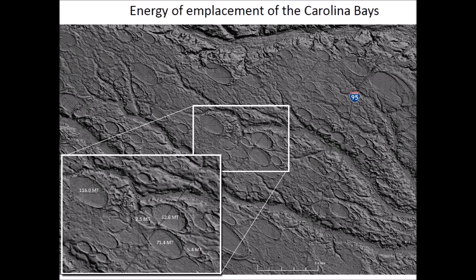This image has Carolina Bays that are even bigger and would have been formed by impacts of huge chunks of glacier ice. It is evident that no animals could have survived the saturation bombardment by the ice chunks that created these Carolina Bays.